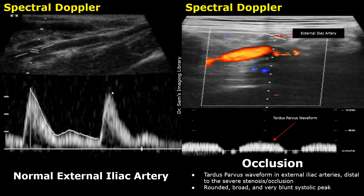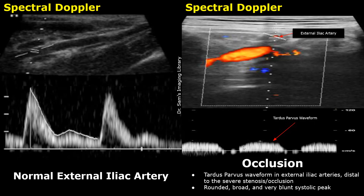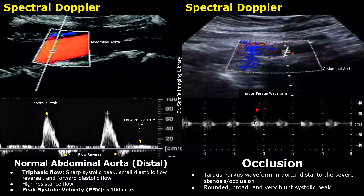In cases of severe stenosis or occlusion, reduced blood flow is seen in the external iliac arteries. A normal waveform of the external iliac artery has a sharp systolic peak and forward diastolic flow. But due to reduced blood flow in the external iliac artery, a Tardus parvus waveform is produced. This waveform has a very rounded, broad, and blunt systolic peak, indicating severely reduced blood flow. This is seen distal to the severe stenosis or occlusion, and the flow is greatly reduced — we see a very small waveform.